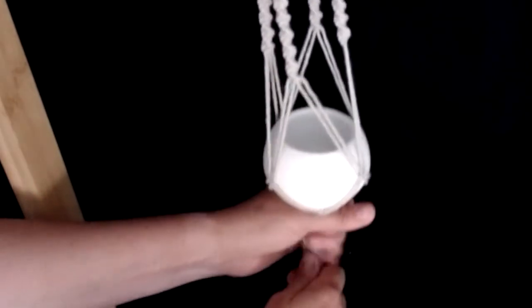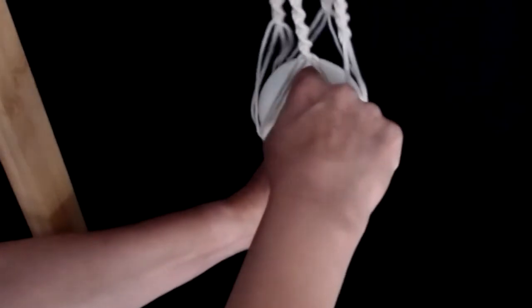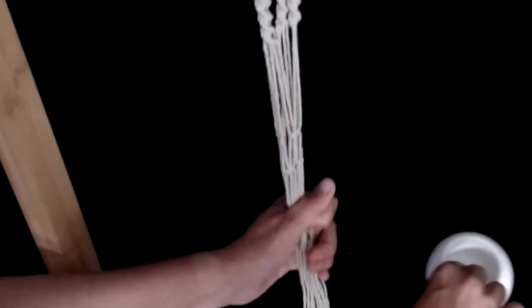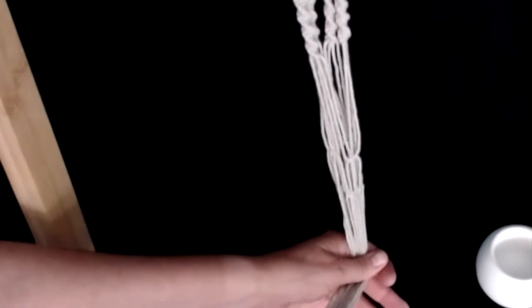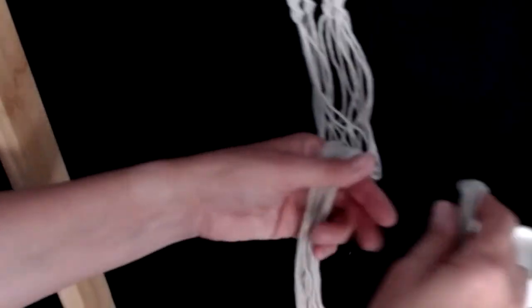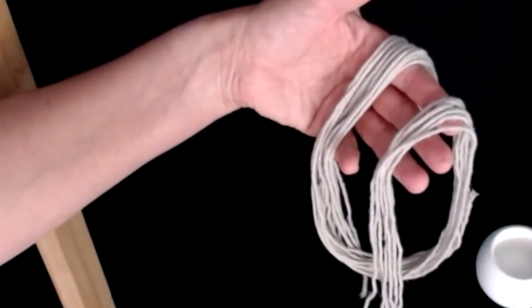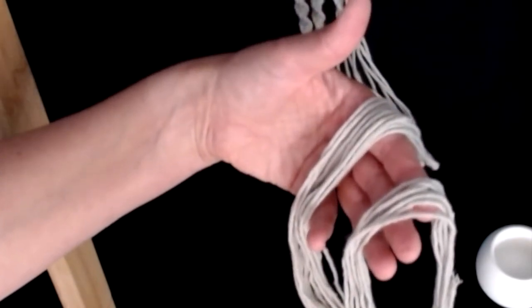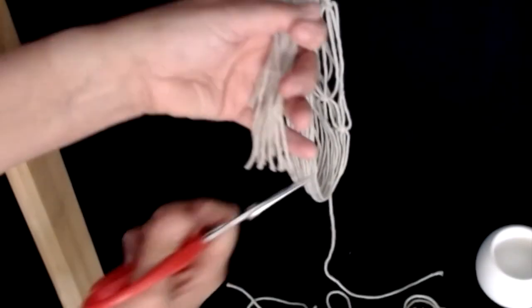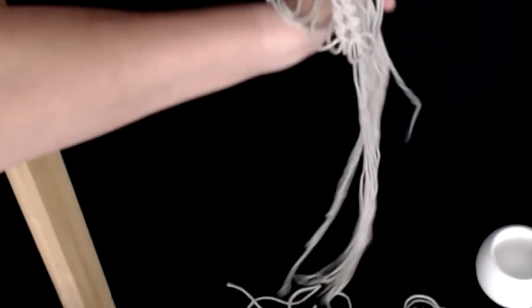I am going to go with another three centimetres to gather the bottom of my basket. I have got loads of thread left at the bottom so I am going to get my scissors and give it a little bit of a cut. Remember it is always better to have too much cord than not enough.